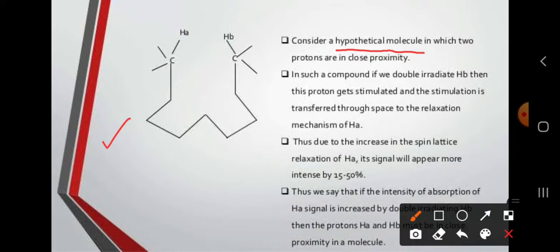Consider a hypothetical molecule in which two protons are in close approach. This is a large molecule with a carbon chain — first carbon, second carbon, third carbon, fourth carbon, fifth carbon, sixth carbon, seventh carbon, eighth carbon — making a nine-carbon chain. When the molecule folds, proton HA and proton HB come into close spatial proximity.